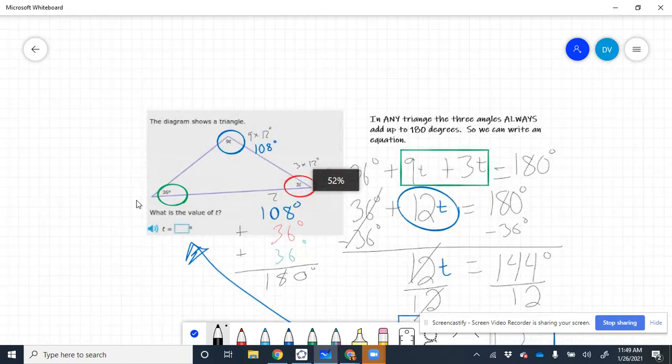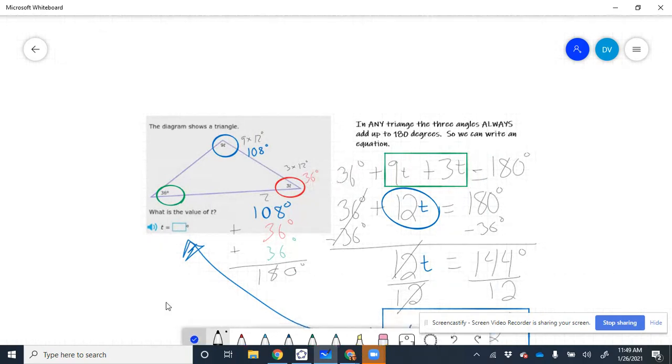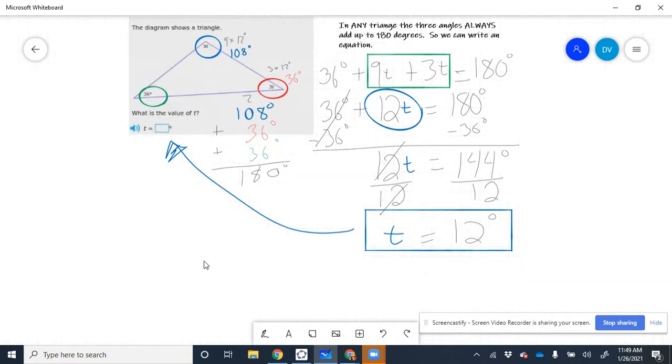So that means the correct answer is going to be correct here. We already put the answer, I just wanted to check it. So let's say that that looks right. T equals 12 degrees.